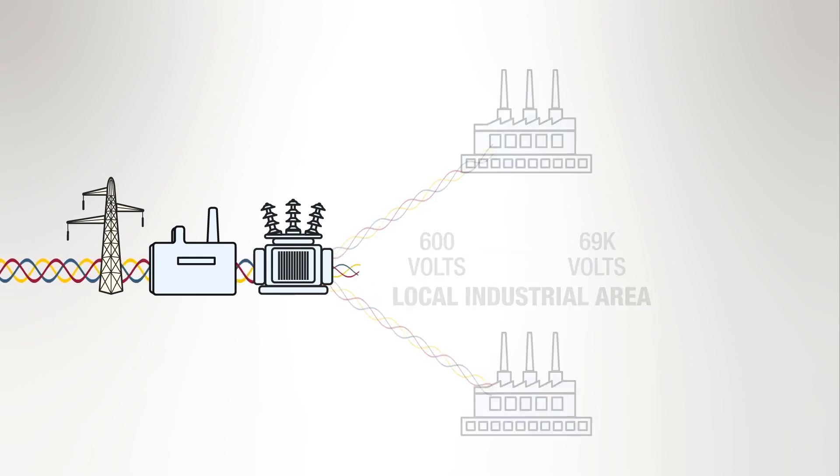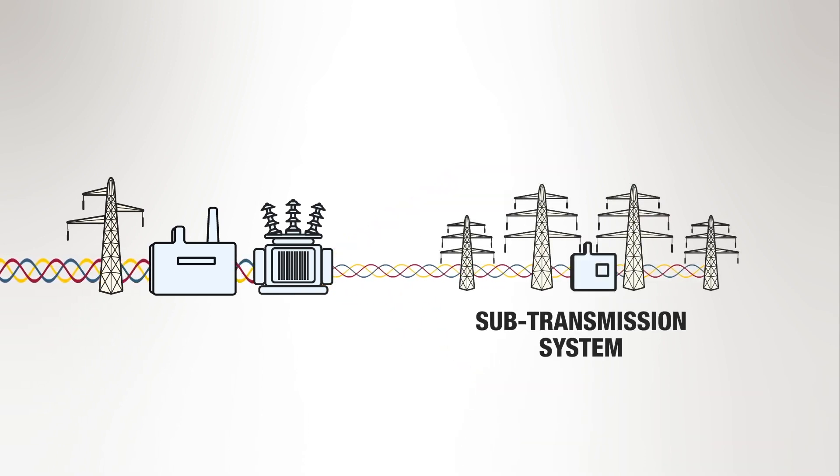After the voltage has been decreased, the power enters the sub-transmission systems for medium voltage customers. These customers have transformers, circuit switching, and protection to handle these voltages. They customize the power to the levels they need for their industrial equipment.